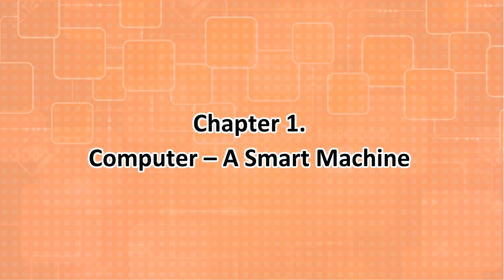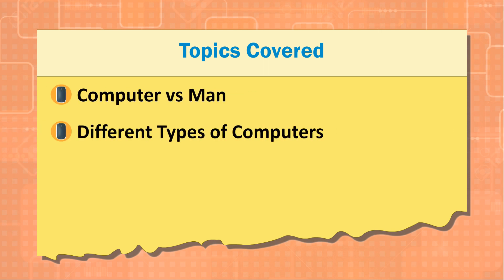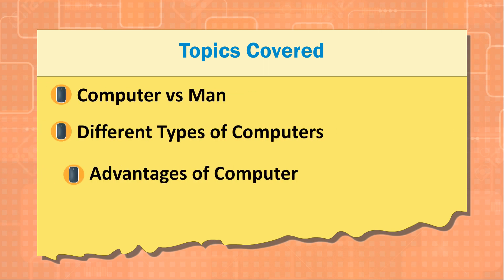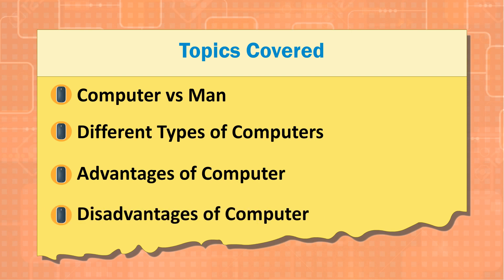Chapter 1: Computer, A Smart Machine. Topics covered: Computer versus Man, Different Types of Computers, Advantages of Computer, and Disadvantages of Computer.